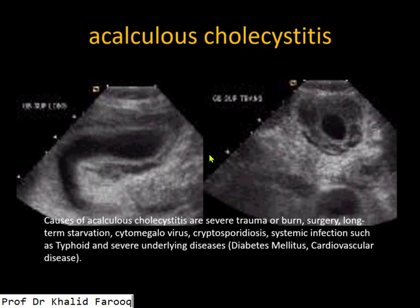Here we see significant wall thickening of the gallbladder and multiple fluid pockets are also appreciated in the pericholecystic space, and we are unable to see any stone in the gallbladder lumen. This is a best example of acalculous cholecystitis, which is usually noted in diabetic patients and in those patients who have some cardiovascular diseases.